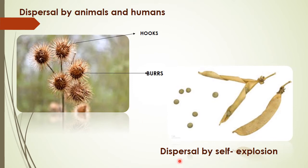Next is dispersal by self-explosion. Fruits of some plants like tea, poppy, and bean burst open when they are ripe and scatter the seeds in all directions. This process of dispersal is called explosion.